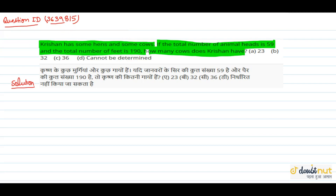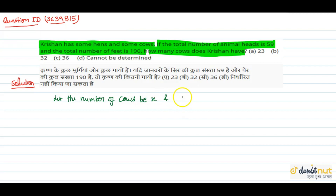First, we will find how many hens there are and how many cows there are. When we know those numbers, we can find the total number of heads and feet. Let the number of cows be x and the number of hens be y. We have assigned both variables x and y.